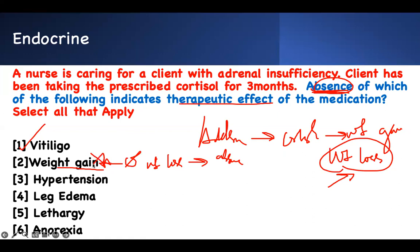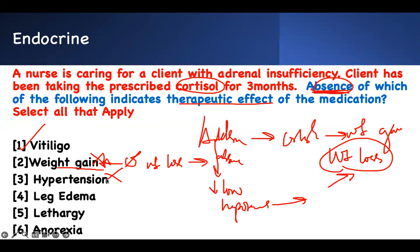I keep going back to the main idea of the question. When you have Addison's, your blood pressure is low. So absence of hypotension will indicate therapeutic effect of cortisol. When you have Addison's, your sodium is low and blood pressure is low.